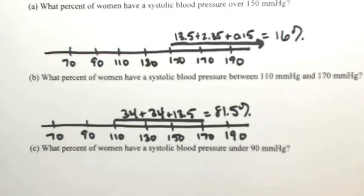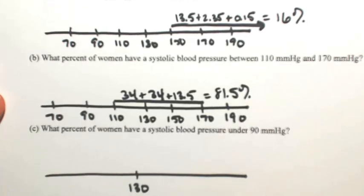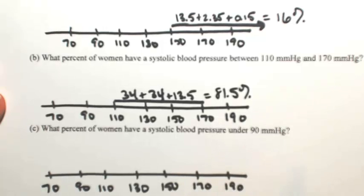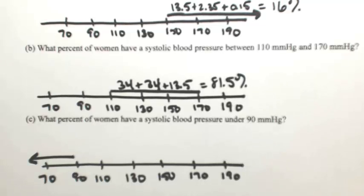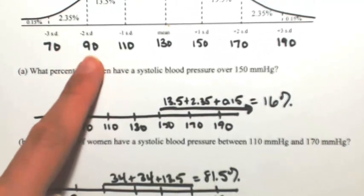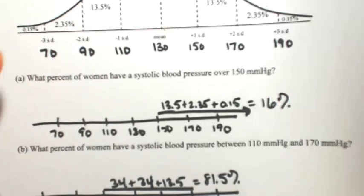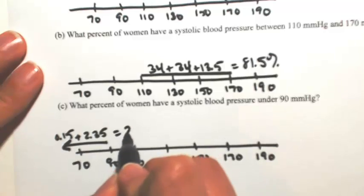Let's look at one more. What percent of women have a systolic blood pressure under 90? So again, draw the number line with 130 in the middle, your mean. So this time we're looking for a blood pressure under 90, so everything to the left of 90. Looking back at our picture, 90 was two standard deviations on the left. So to the left of that, between 70 and 90 is 2.35%, and to the left of 70 is 0.15%. So adding that together, we get 2.5%.